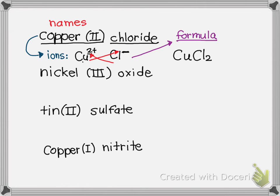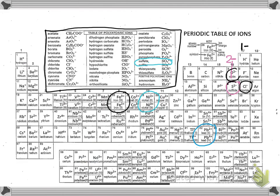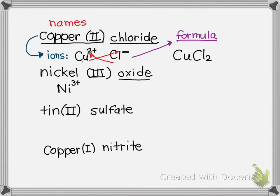Nickel(III) oxide: nickel is a 3+, and oxide — oxygen is in group 6A — is a 2−. For nickel, look at the opposite charge: 2, so two nickels. For oxide, look at the opposite charge: 3, so three oxides. The formula is Ni₂O₃. To get from a name to a formula, you must work through the charges to get the ions first.